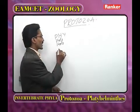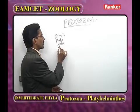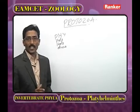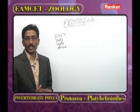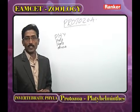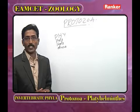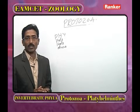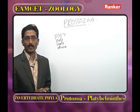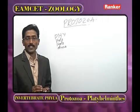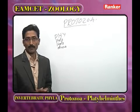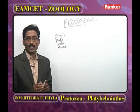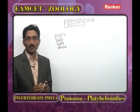Some Protozoans are osmotrophs. In Protozoans, the body is covered and protected by a pellicle; in some animals by a shell, and in some only by a plasma lemma. Protozoans are said to be immortal.